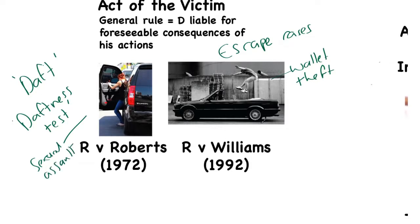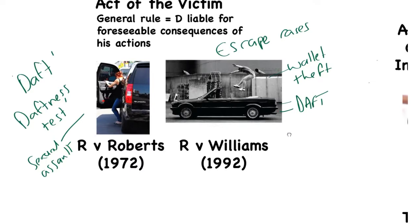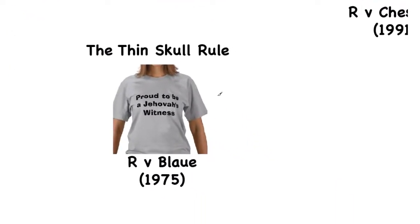You can see immediately that the victim in Williams jumping from a car because he thought somebody was going to steal his wallet is daft. Nobody could ever foresee that if you try to steal somebody's wallet, the next thing they will do is jump out of a moving car. It was held to be an unreasonable reaction and disproportionate to the threat; therefore the chain of causation had been broken by the victim's intervening act and the defendant was not liable. Remember: contrast Roberts and Williams and apply the daftness test.